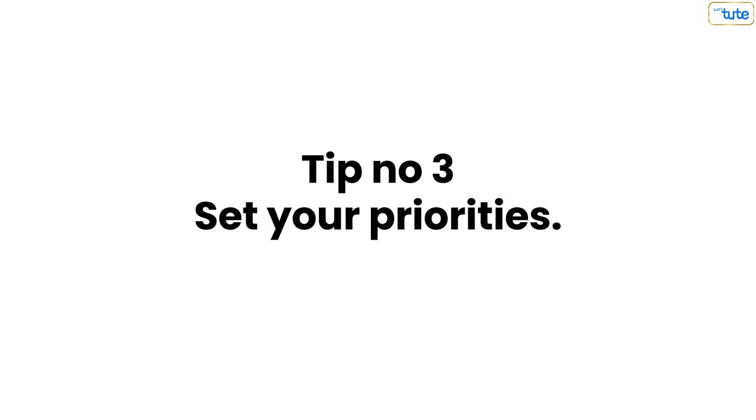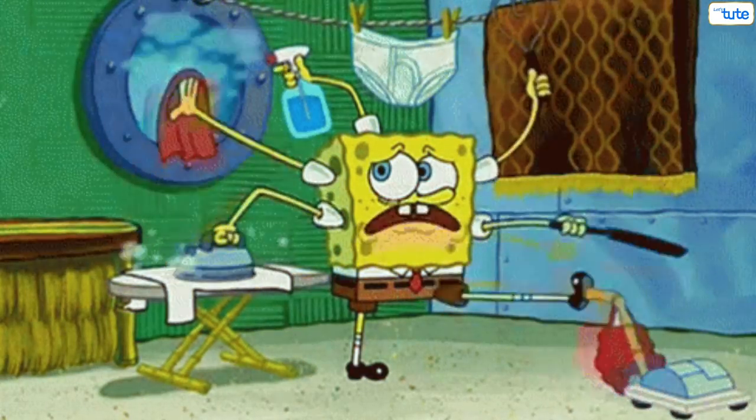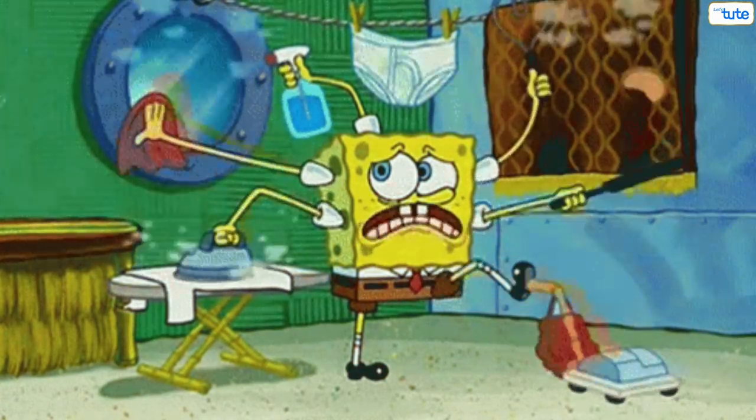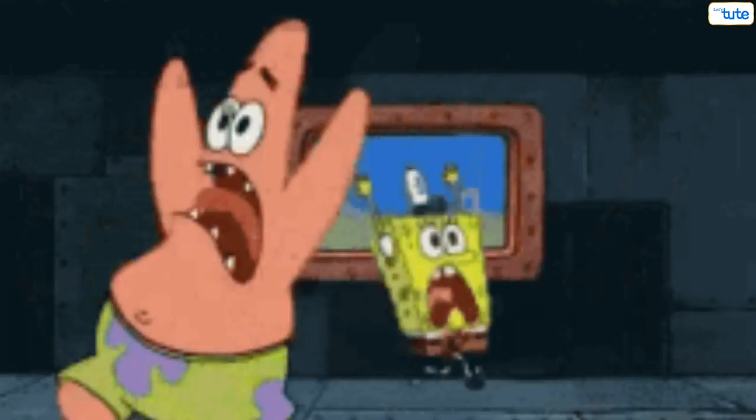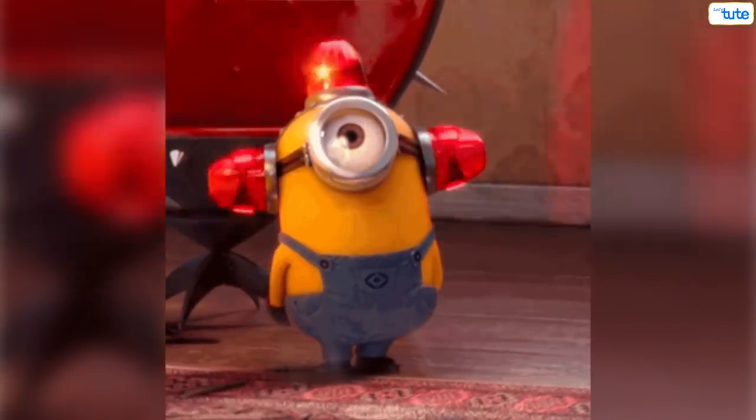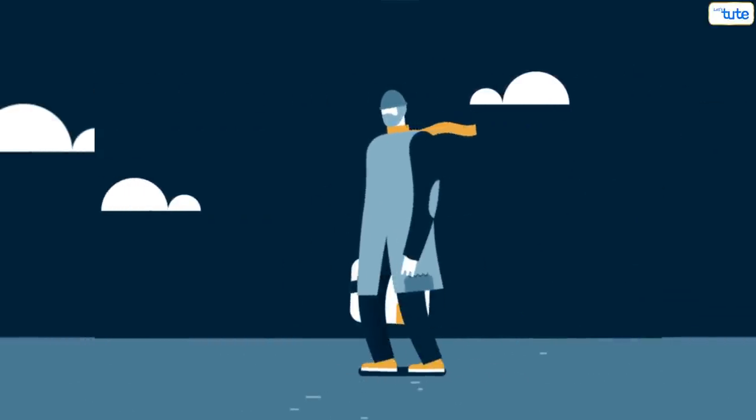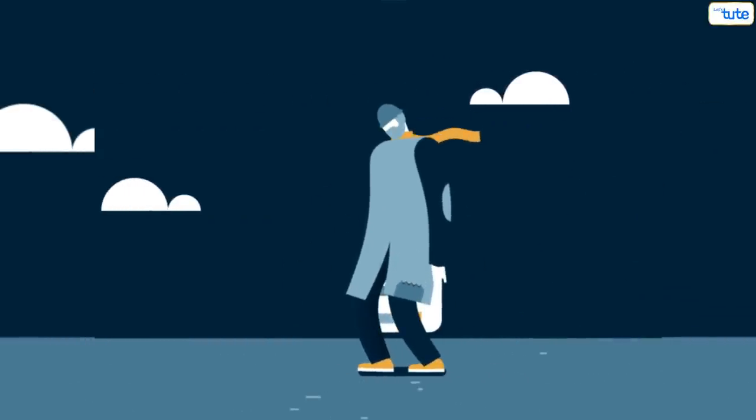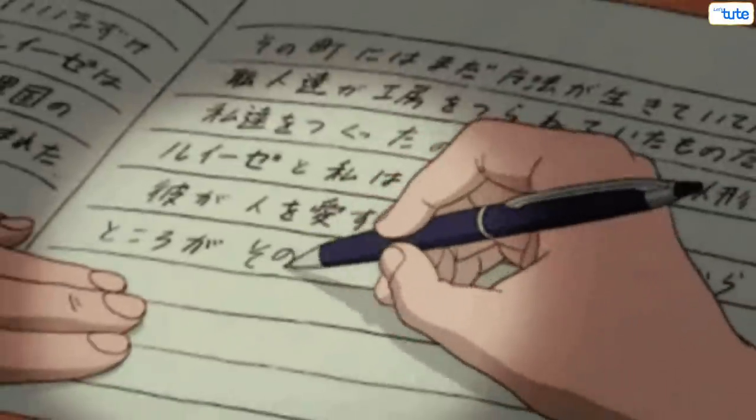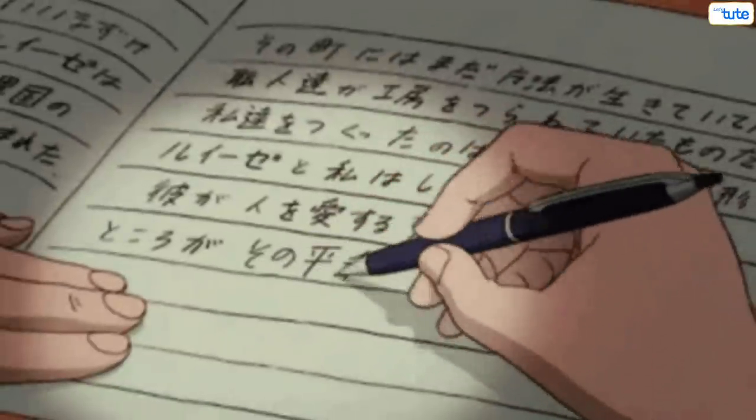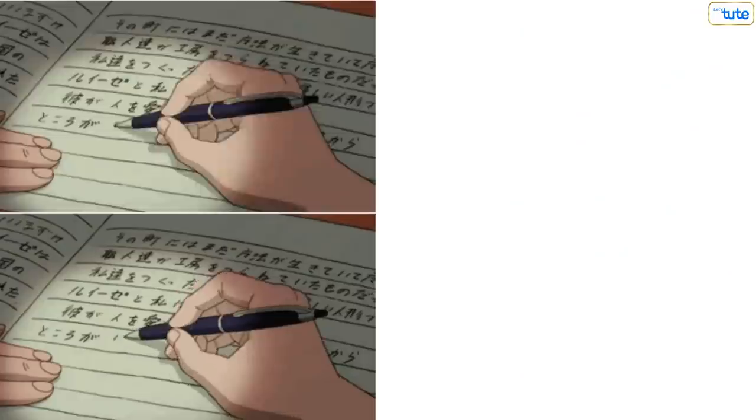Tip number 3: Set your priorities. We all have different tasks to do during the day span. Some are urgent while some are less urgent. So, to use your time effectively, we will have to set the priorities based on how urgent those tasks are. For that, take a sheet of paper and write down a list of tasks and put them into one of the four categories.